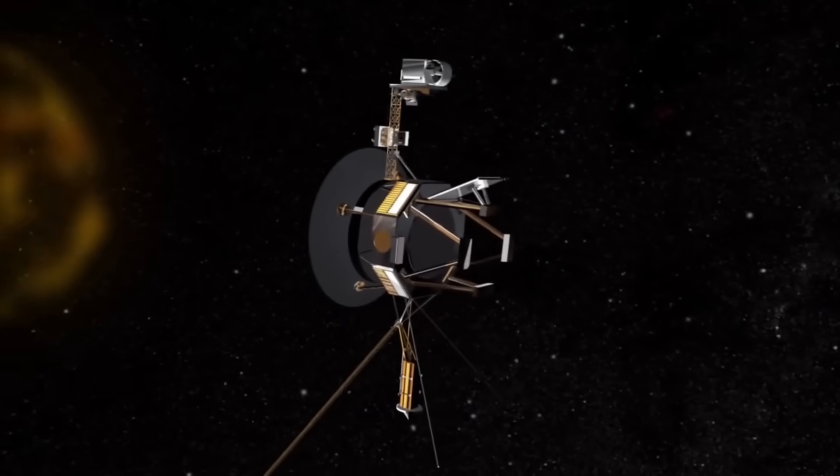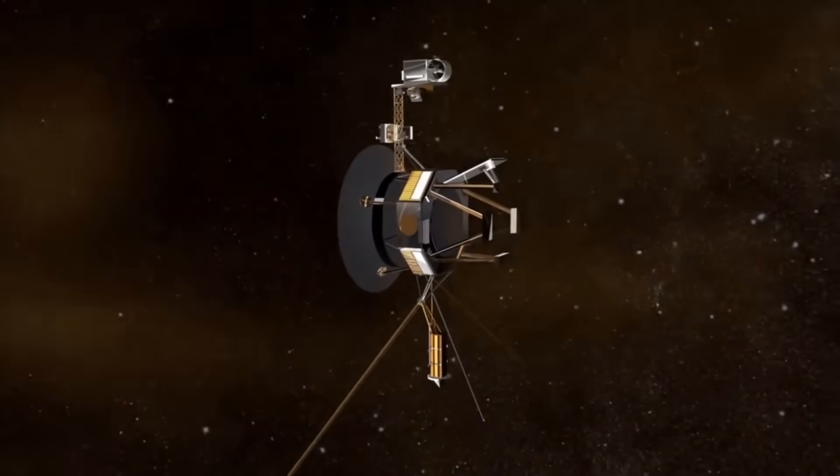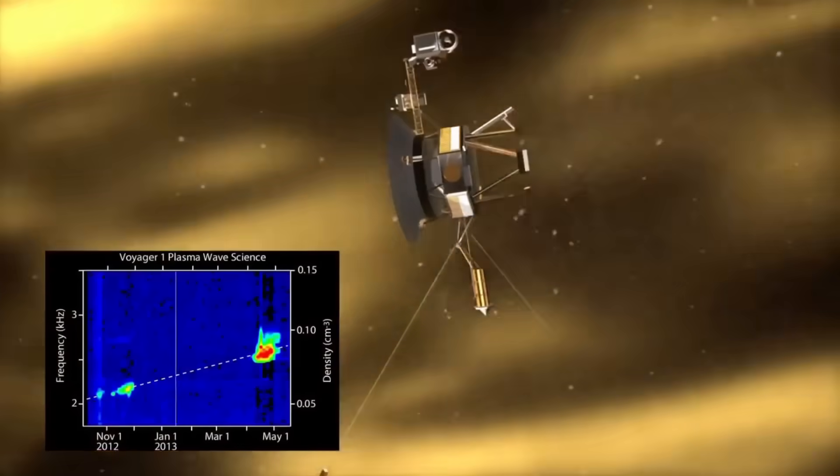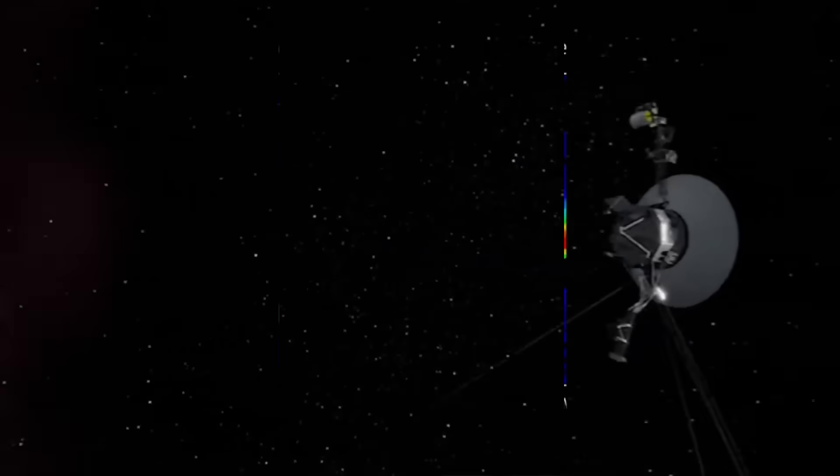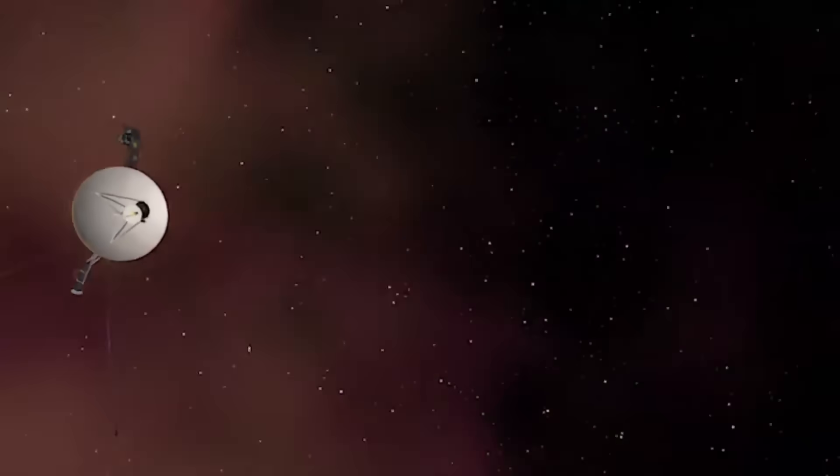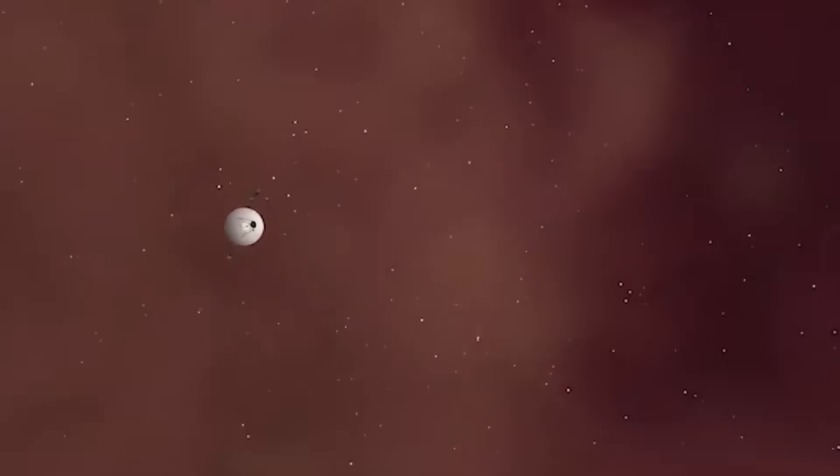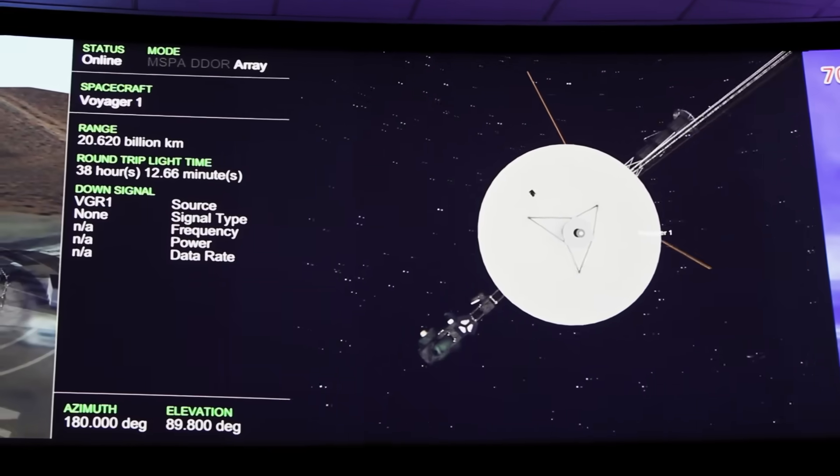For decades, Voyager traveled through the heliosphere, the bubble of charged particles and magnetic fields created by our sun. Then, in August 2012, Voyager 1 crossed the heliopause, becoming the first human-made object to enter interstellar space.